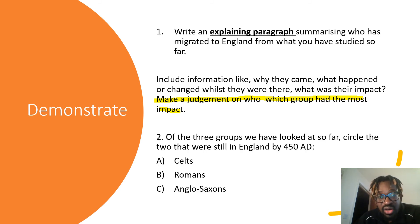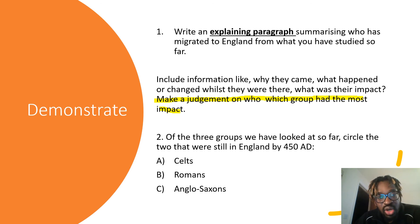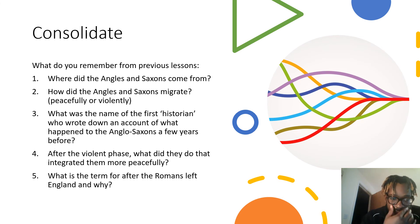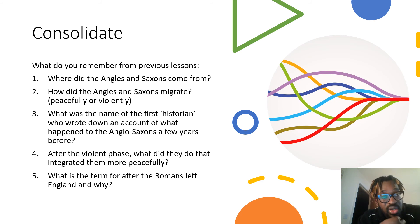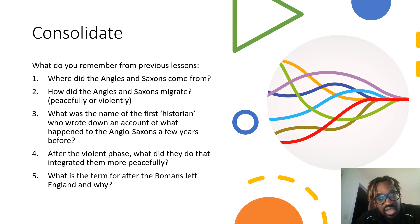Lastly, of the three groups we have looked at so far, circle the two that were still in England by 450 AD. Obviously you can't circle it on the slide, so just indicate that in the work you produce. Then the consolidate task: just five questions — answer them based on everything done so far. Where did the Angles and Saxons come from? How did they come? What was the name of the first story? Answer those five questions covering everything you should have learned within the context of this lesson.